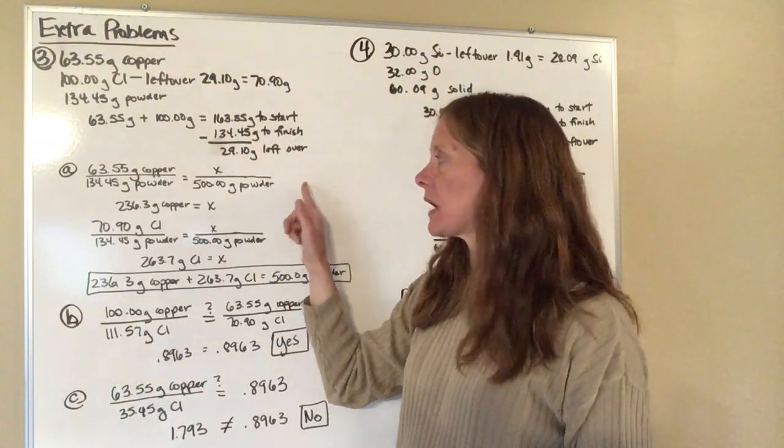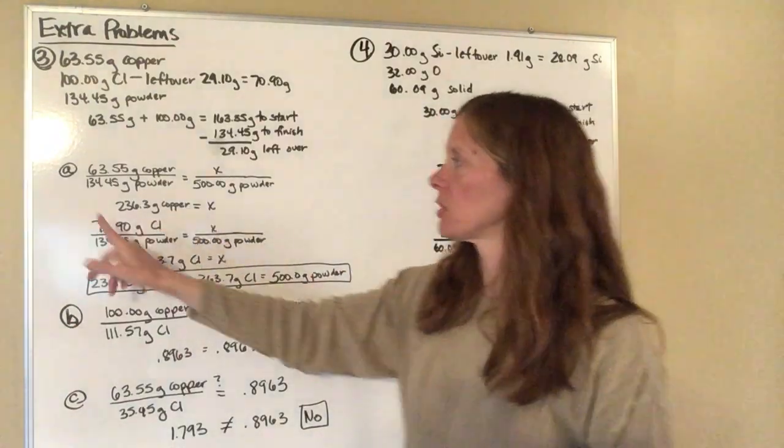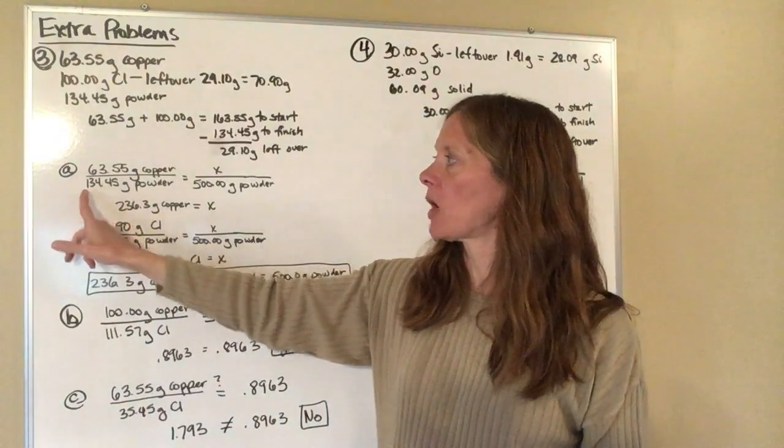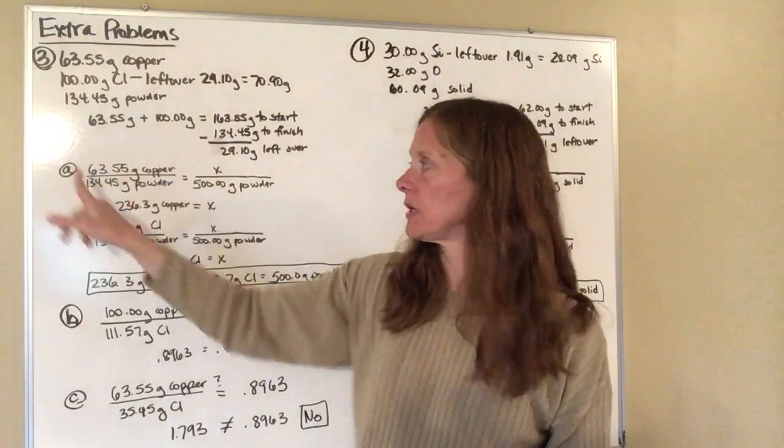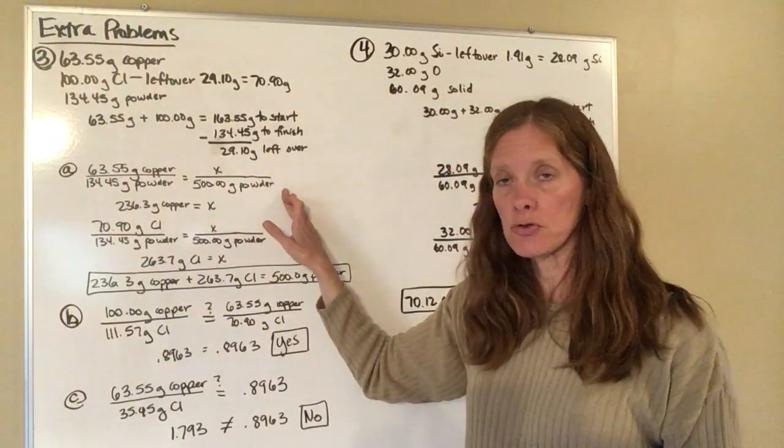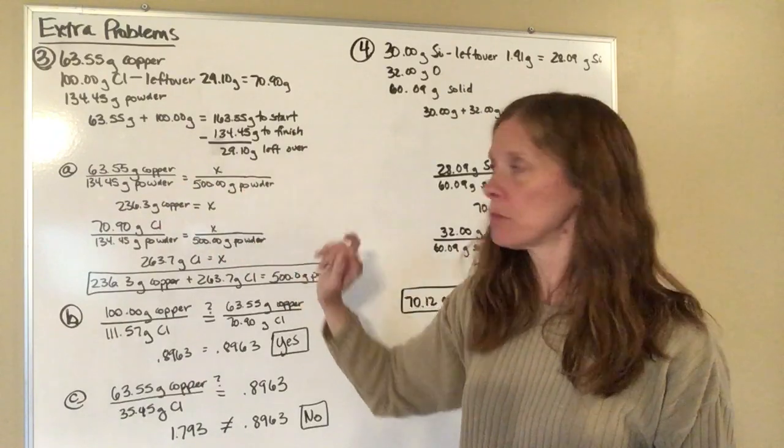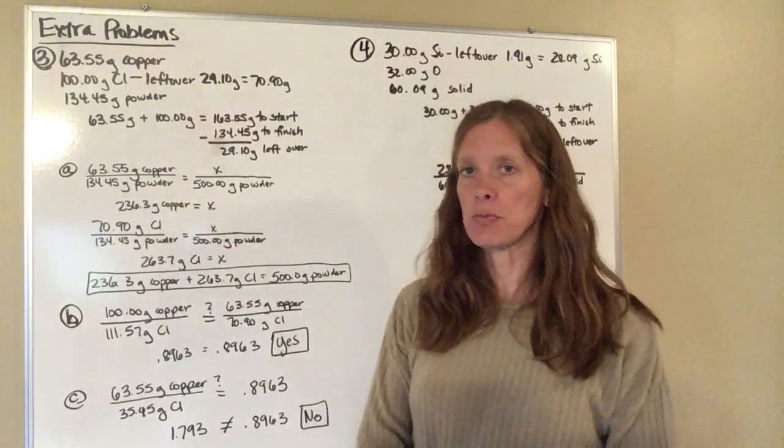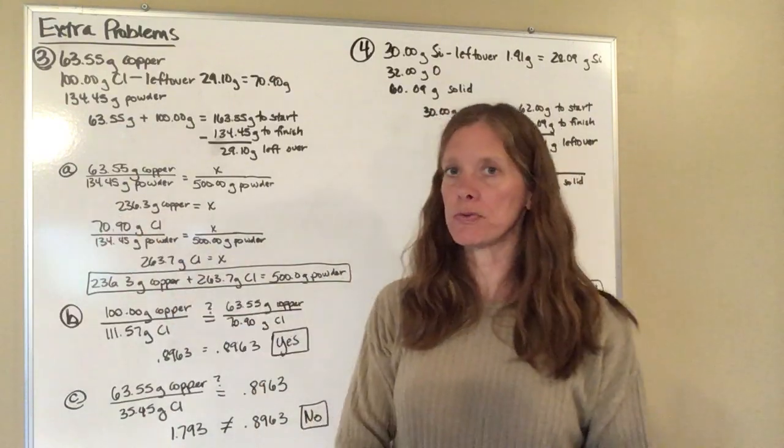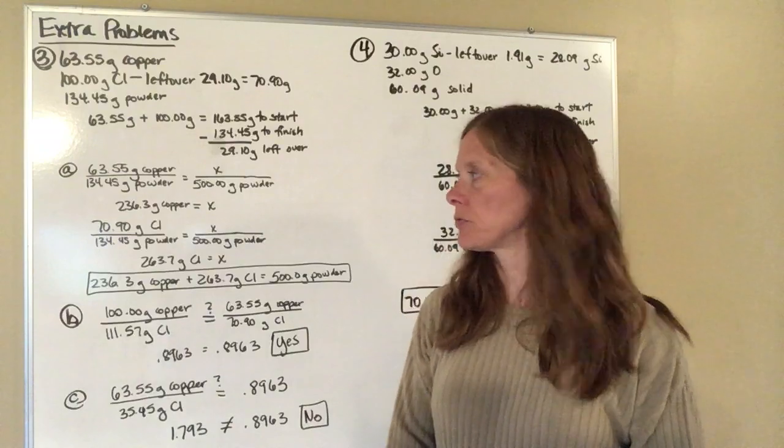So now that I have the exact amounts that I've used in each one I can set up a proportion if I know that I want to make 500 grams of powder. So first I'm going to start with 63.55 grams of copper for the 134.45 grams of powder that I started with initially. I now want to make 500 grams of powder so that will go on the right hand side. Powders are on the bottom on both sides. So you're going to take 500 times 63.55 divided by 134.45 and that will give you 236.3 grams of copper.